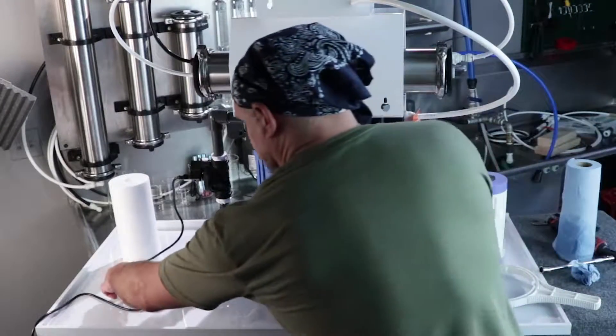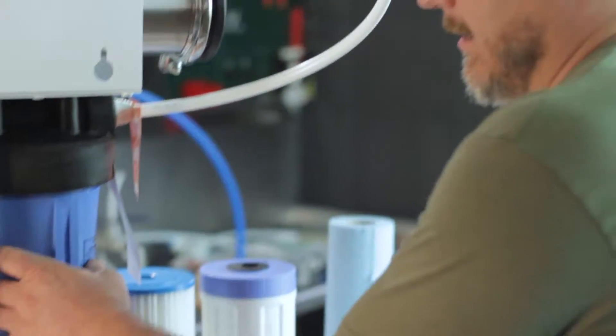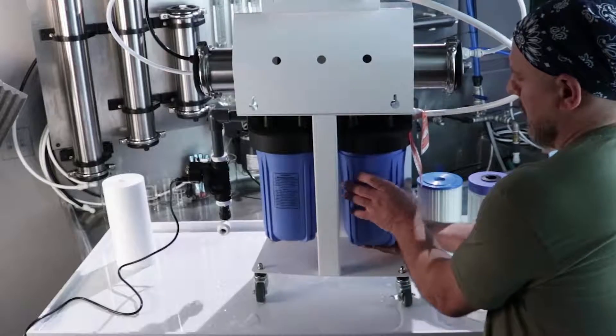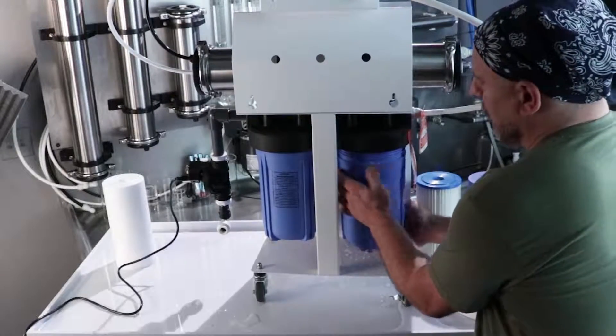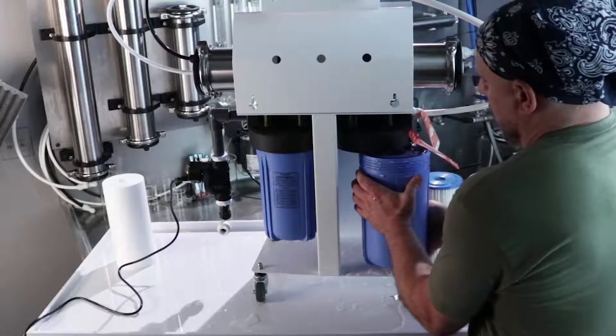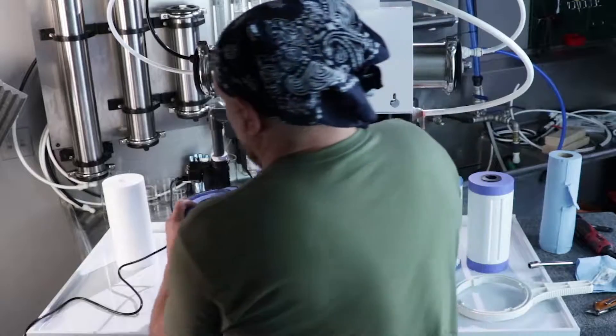Now we'll move on to the carbon filter. Give a good turn to the left like that. Wind it out. A lot of water is going to come out. This thing holds almost a gallon of water. I'm going to pour it out right here.